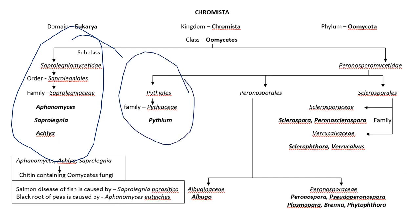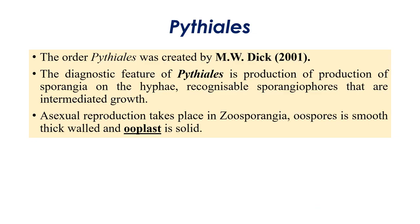Now we are going to discuss Pythiales. There is only one important fungus that comes under Pythiales, and that is Pythium. We are going to discuss the Kirkatal classification only. At present, Pythium is actually classified under Peronosporales, but I will tell you about that at the end. This order Pythiales was actually created by NWDK in 2001.